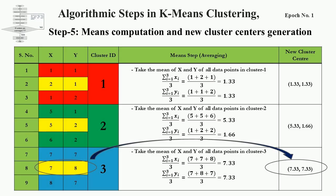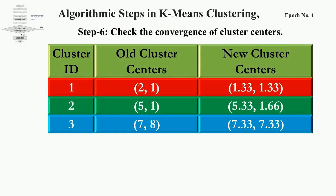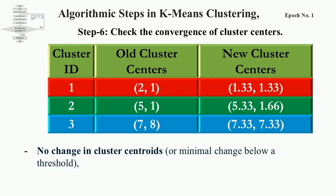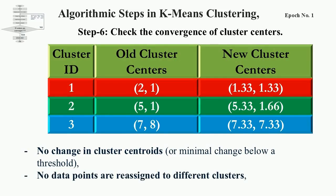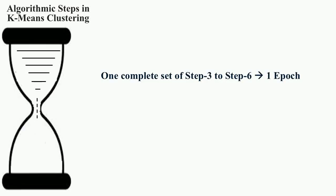This is the end of step 5. In step 6, all old and new cluster centers are compiled in a table — this is the convergence check step. If all old and new cluster centers are exactly the same or within a desired threshold limit, it is the state of convergence. If cluster centers are converged, there was no movement of any data point from one cluster to another in two consecutive epochs, and one epoch is completed. An epoch covers steps 3 to 6. If cluster centers are not converged, then steps 3 to 6 are repeated with the new cluster centers.